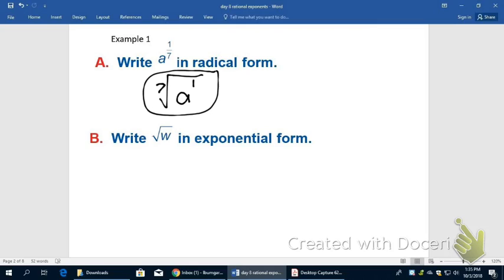On part B, I'm going to really quick write in a couple pieces of information on this problem that aren't written that are just assumed. Because it says square root, it's to the second index on the root and w will be to the first power.